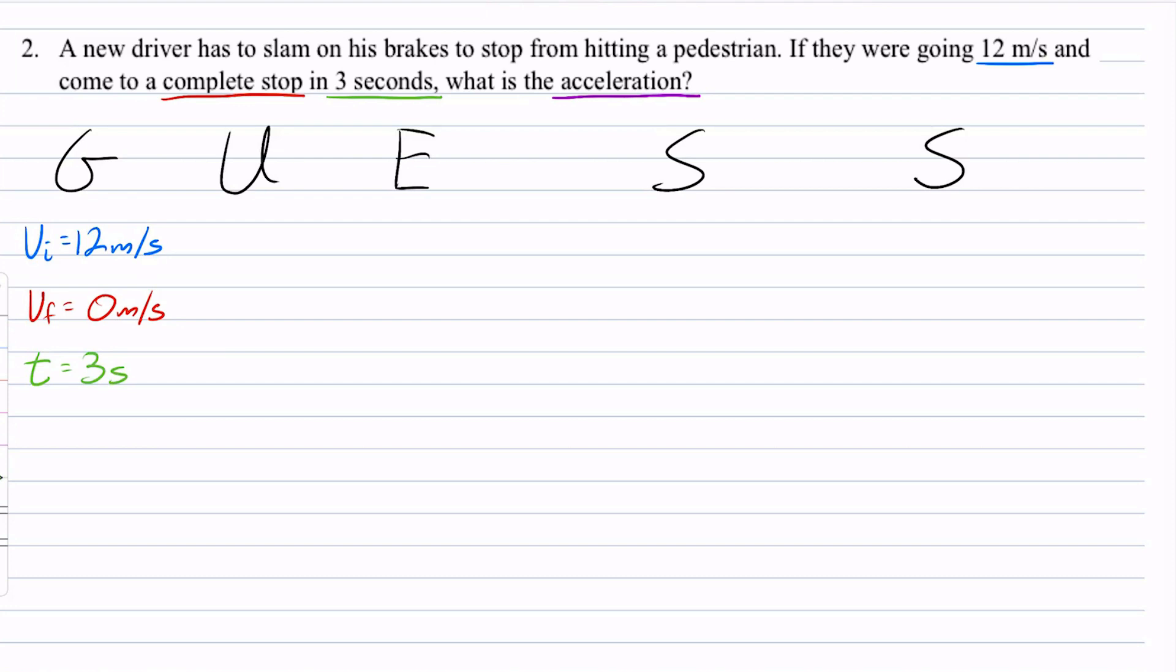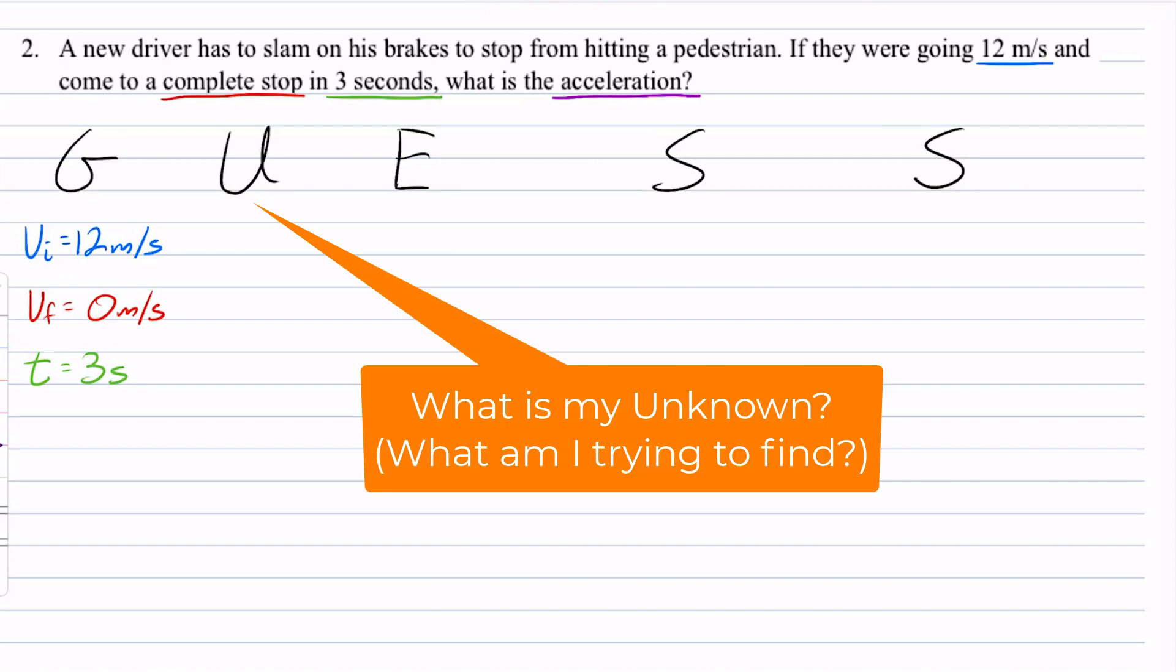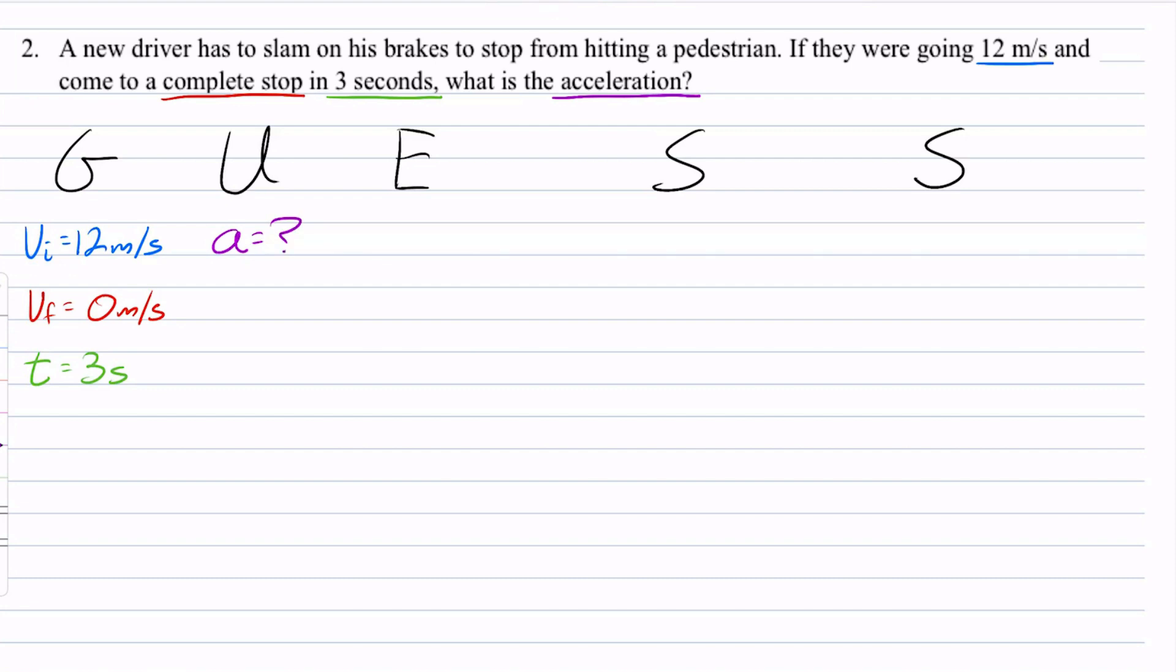It took them 3 seconds to go from 12 meters per second down to 0 meters per second. My unknown, once again, is going to be acceleration. So I don't know what acceleration is. That is my U, my unknown.